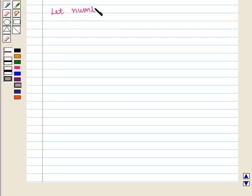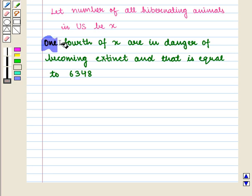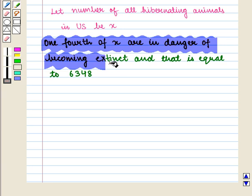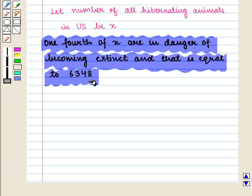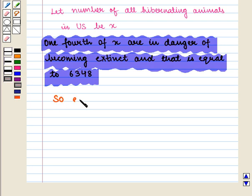Let number of all hibernating animals in US be x. And it is given that one fourth of x are in danger of becoming extinct, and that is equal to 6348. So equation is 1/4 of x that is 1/4 × x = 6348.